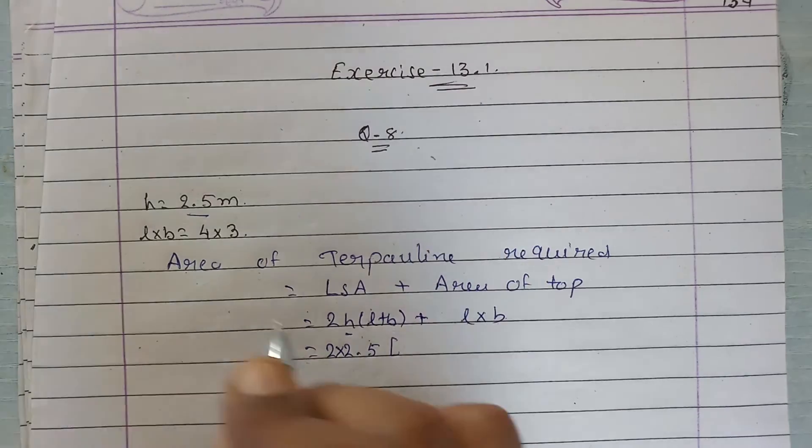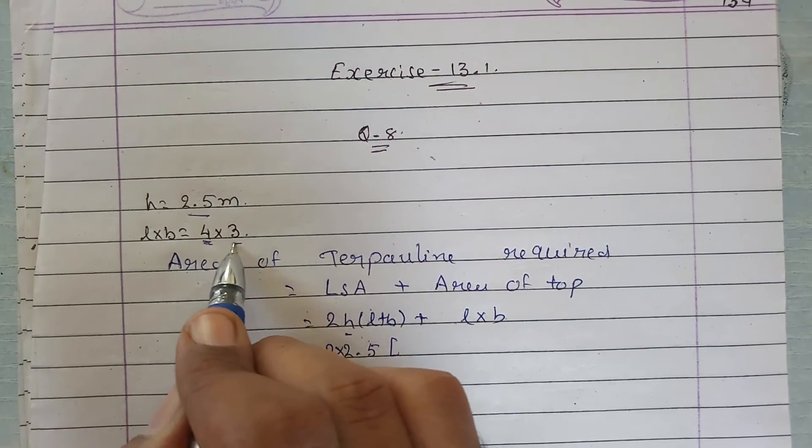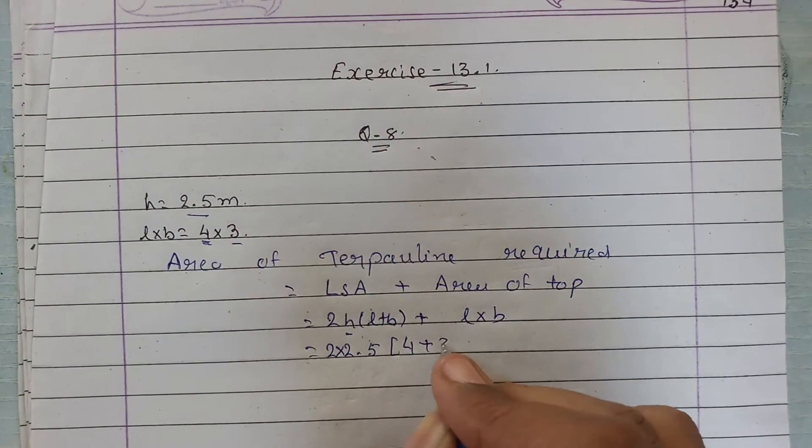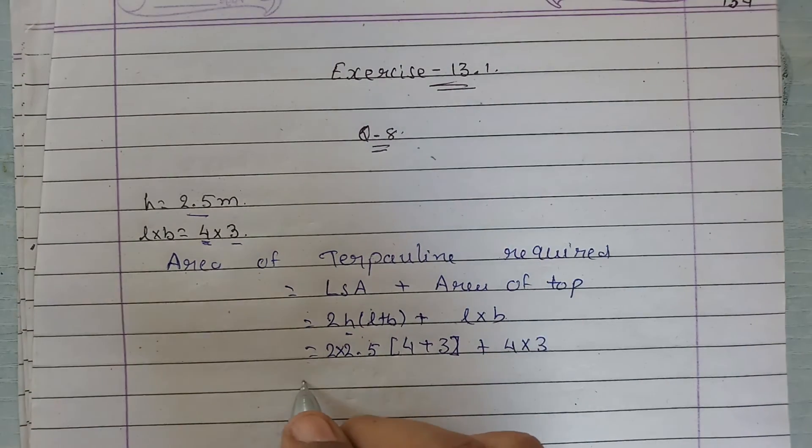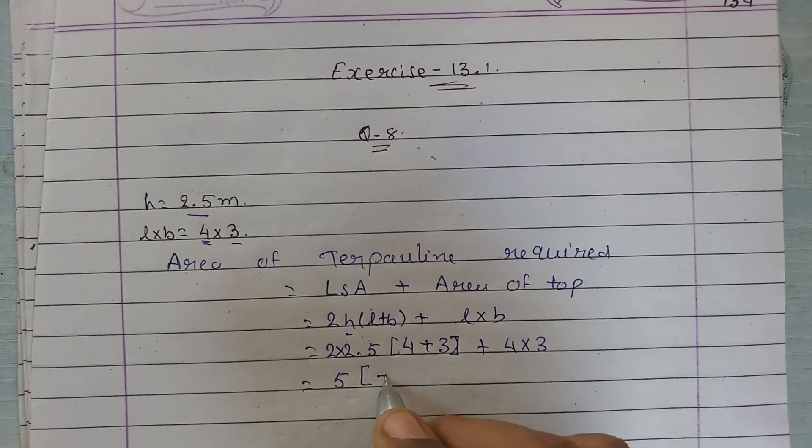Then l plus b, l is 4 and b is 3, so that is 4 plus 3, plus l into b that is 4 into 3. Now solving it further, 2.5 into 2 that is equal to 5, 4 plus 3 is 7, and 4 threes are 12.